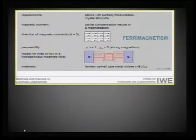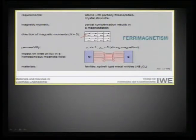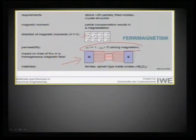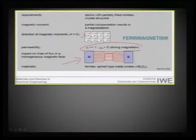When we come to ferrimagnetism, partial compensation of moments results in a net magnetization. Each domain contributes a net magnetization, which is possible only in metal oxides or metals that are partially filled, and it also depends on crystal structure. The permeability will be much stronger and molar susceptibility greater than zero. Looking at the impact of external flux lines on ferrimagnetic compounds, there is a strong interaction with the external field strength and the domains become influenced by the applied magnetic field.